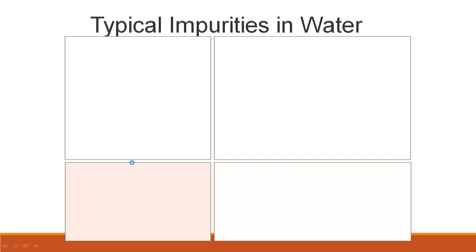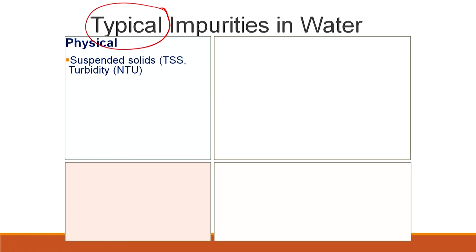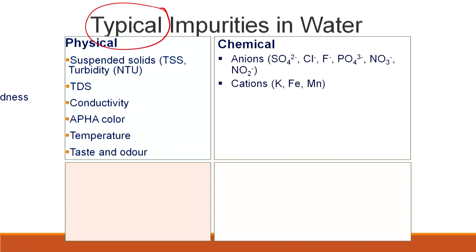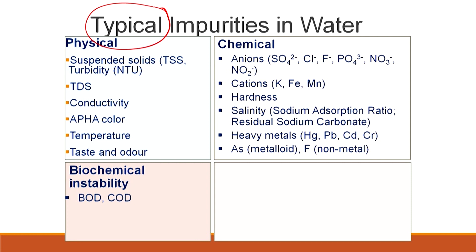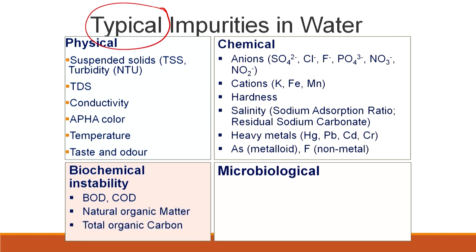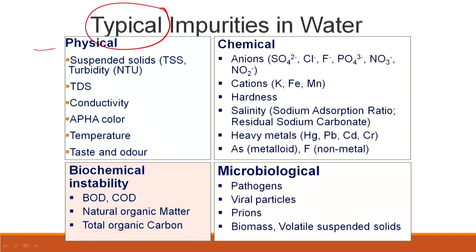So, typical impurities in water. If we look at every case under the sun, everything is possible, but we are looking at the typical impurities in water. Typically we have physical, chemical, and microbiological impurities.